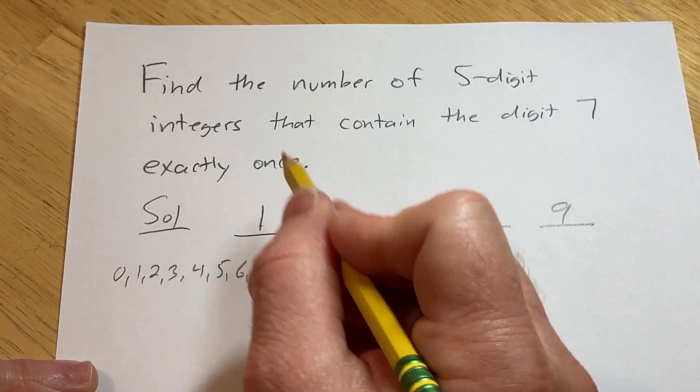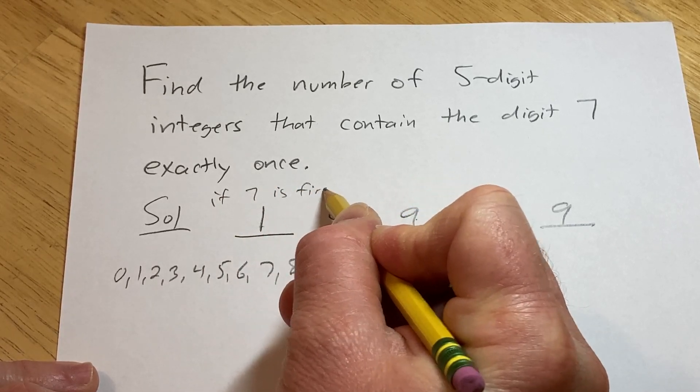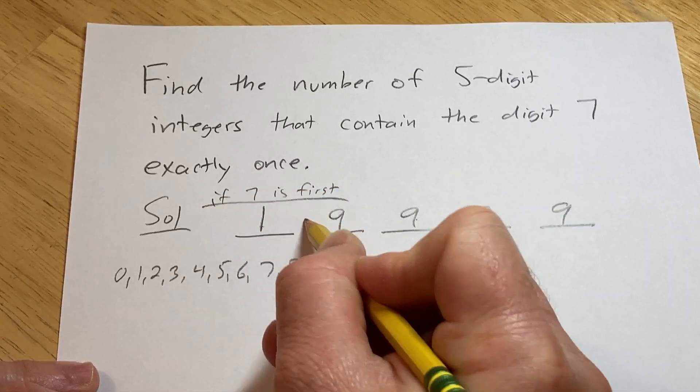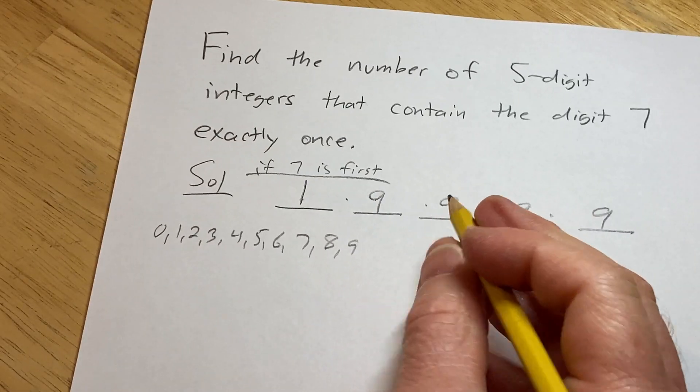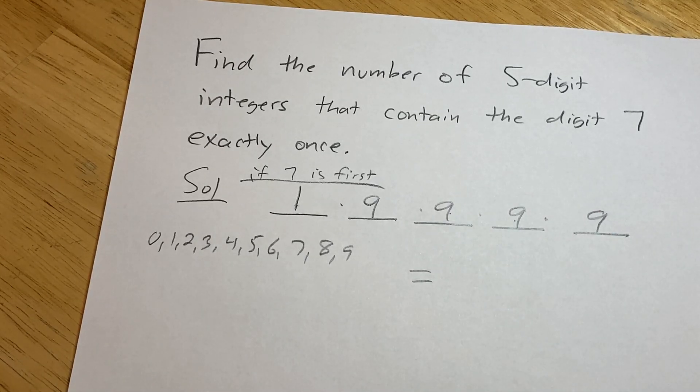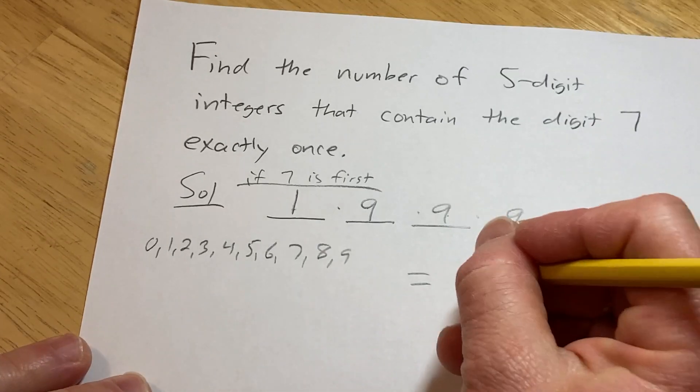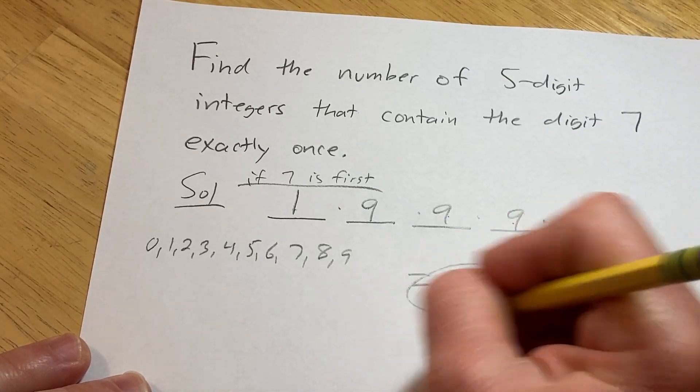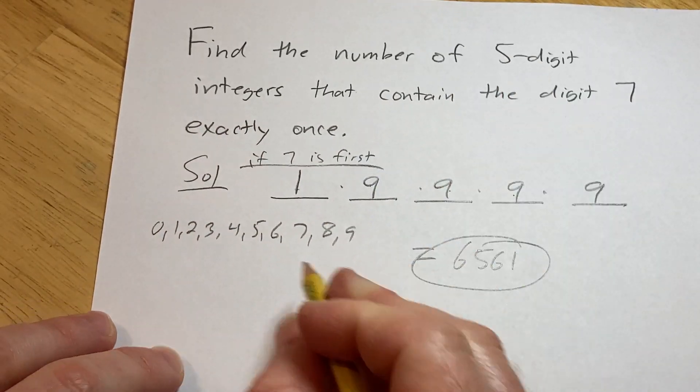So if 7 is first, you just multiply and this is how many possibilities you get. And this number here is really big. I don't know what it is. I'm just gonna type it in my calculator here to take a shortcut. So that would be 6,561 five-digit integers if the 7 comes first.